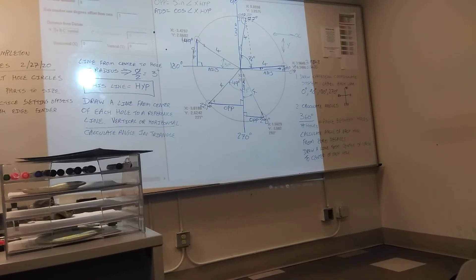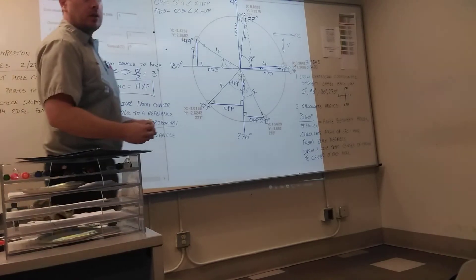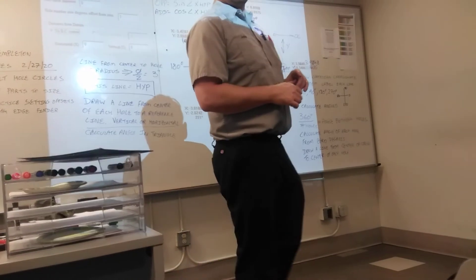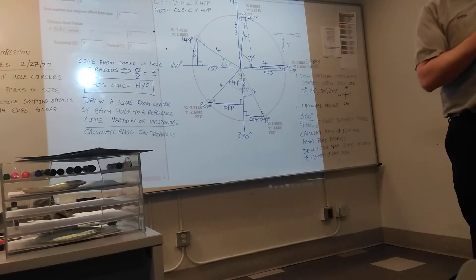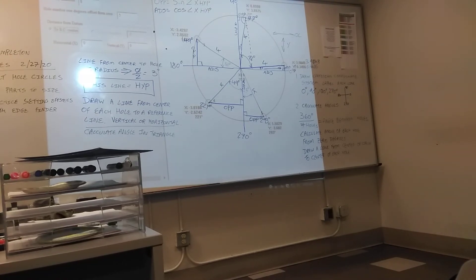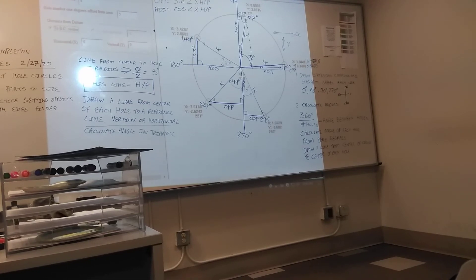So in hole number two, what does the opposite give you? Gives you the x axis. The opposite doesn't always give you the y. It just depends on what quadrant you're in. Is that line vertical or is it horizontal?